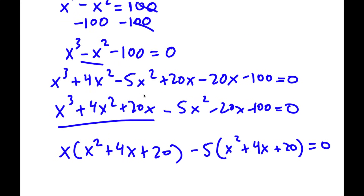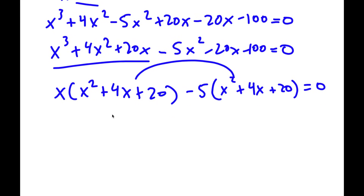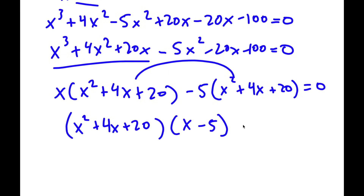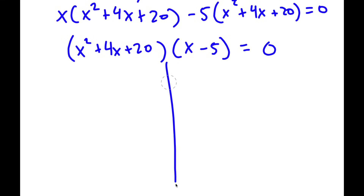The reason I added 4x squared minus 4x squared plus 20x minus 20x was so that both groups would share the same greatest common factor and factor out to the same expression — they both have x squared plus 4x plus 20. If I factor out x squared plus 4x plus 20, I get x squared plus 4x plus 20 times x minus 5 is equal to 0. This gives me two equations: x minus 5 equals 0, and x squared plus 4x plus 20 equals 0.